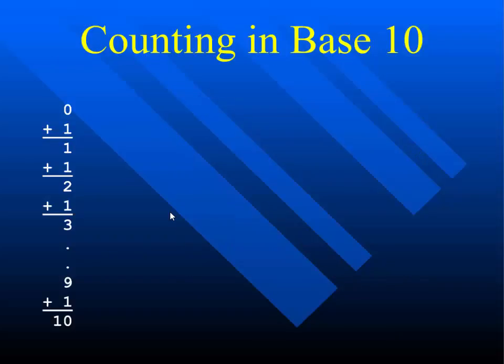Counting in base 10 — does everyone know how to count? I'm a programmer, so I start counting at 0. Add 1 to 0 and get 1, add 1 to 1 and get 2. You just add 1 to get the next number. Notice what happens when we get to 9: we add 1 to 9 but don't have a single digit for 10. What we have to do is put a 0 and carry the 1, giving us 10. Whatever the base is, there's no single symbol for that number — we have to use two digits.